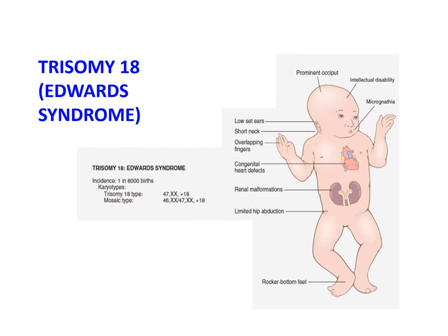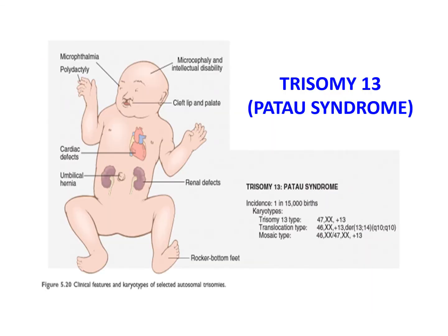Other trisomies include trisomy 18 or Edwards syndrome and trisomy 13 or Patau syndrome. Like trisomy 21, most cases result from meiotic non-disjunction and carry a complete extra copy of chromosome 13 or 18. An association with increased maternal age is also noted. In contrast to trisomy 21, however, the malformations are much more severe and wide-ranging, and only rarely do infants survive beyond the first year of life — most die within a few weeks to a few months.